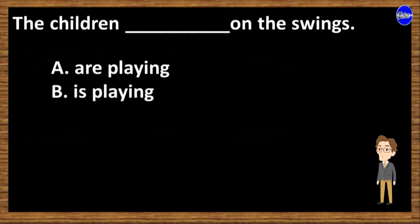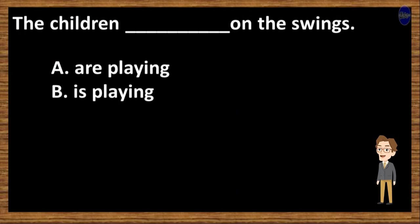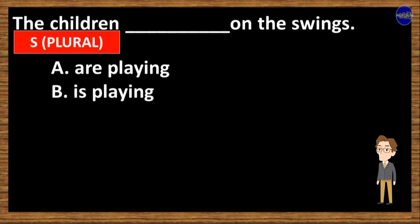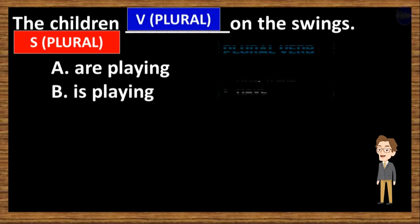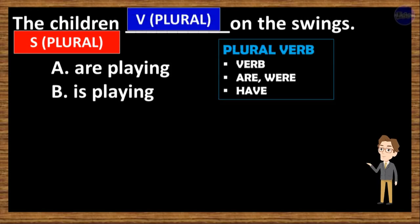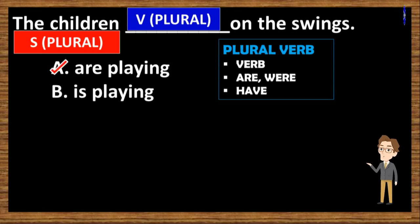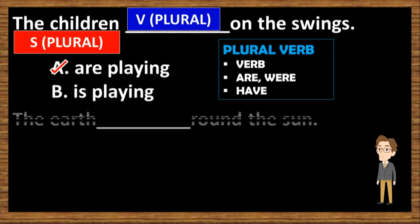The children ___ on the swings. A, are playing. B, is playing. The subject of this sentence is 'the children.' You have to know that 'children' is plural. So, to answer this, we have to use plural verb too. Then the answer to this question is option A — are playing.